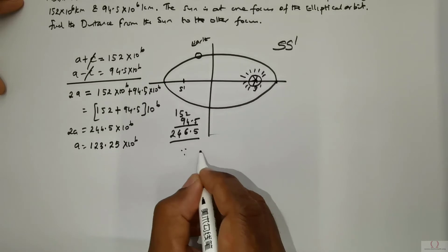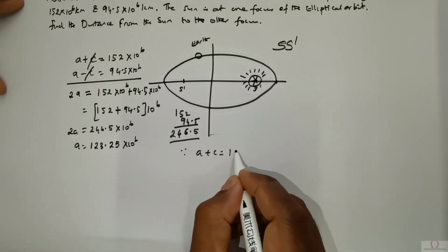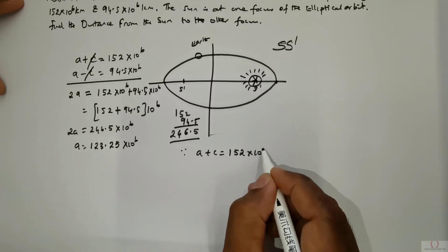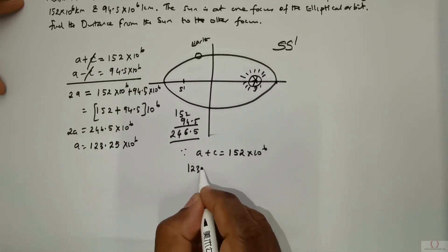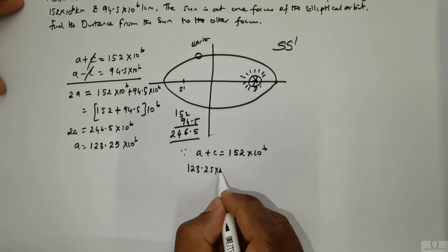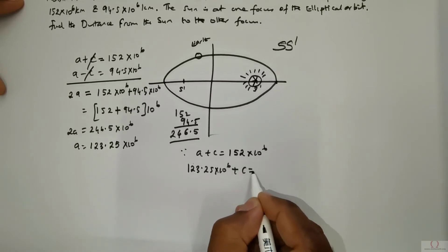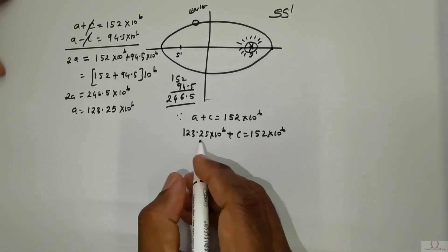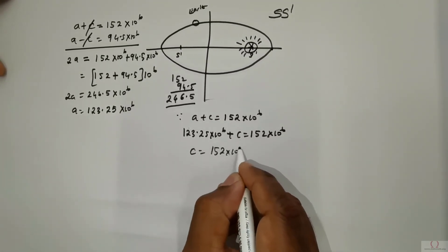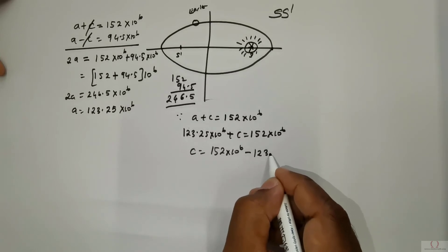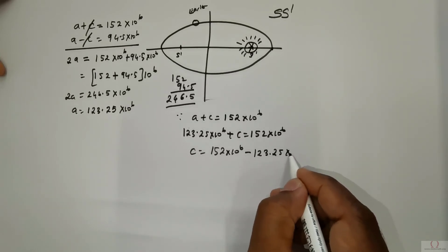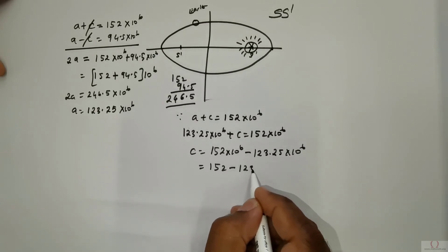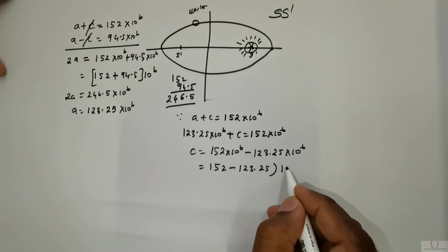Now since a plus c is 152 times 10 to the power 6 I substitute the value of a 123.25 times 10 to the power 6 plus c is equal to 152 times 10 to the power 6. So therefore from here c is 152 times 10 to the power 6 minus 123.25 times 10 to the power 6 which is 152 minus 123.25 times 10 to the power 6.